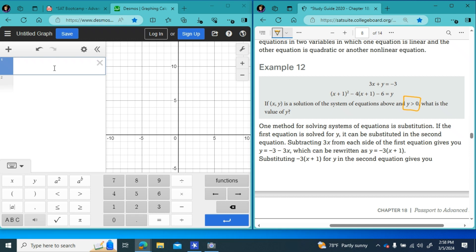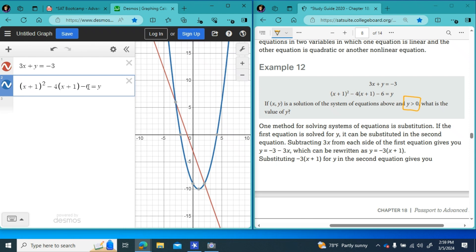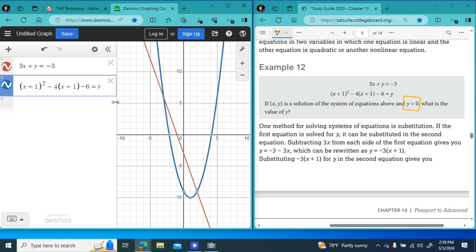Which says 3x plus y equals negative 3 and x plus 1 squared minus 4 times x plus 1 minus 6 equals y. So I'm just going to type those in. 3x plus y equals negative 3, x plus 1 squared minus 4, x plus 1 minus 6 equals y. So now I see two solutions to my system of equations.